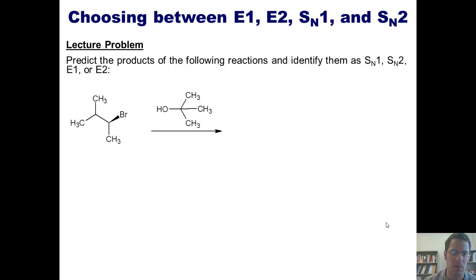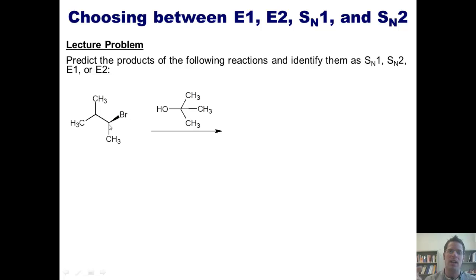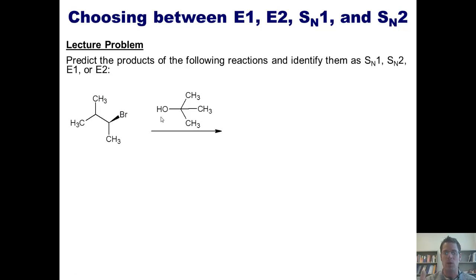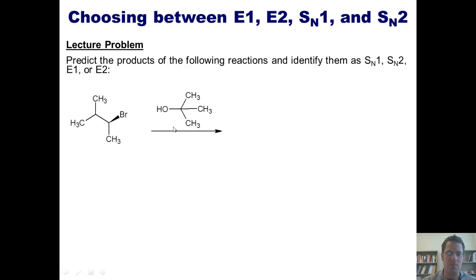For this example: is my leaving group stuck to a primary, secondary, tertiary, or stabilized carbon? It is secondary, so it could be SN1, SN2, E1, or E2. Is my nucleophile/base strong or weak? There are no localized negative charges of any kind, so it is weak — meaning I can narrow it down to SN1 or E1. Is my nucleophile/base a nucleophile or a base? It is larger than ethanol when drawn on paper, so it is a base, which means it will favor an E reaction. This will proceed by an E1 mechanism.